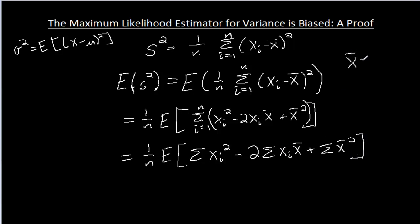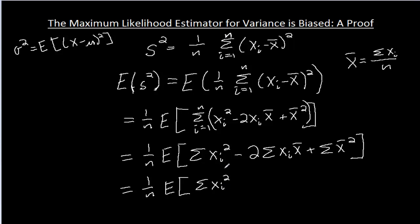Now remember that x̄ is the sum of the xᵢ's divided by n. So I have 1 over n times the expected value of the sum of the xᵢ squareds, and then minus 2 — now the sum of xᵢ's is x̄ times n — so I have x̄ times n times x̄. Plus: x̄ squared does not change when i changes; it's the average of all those x's. So when I add up n of these, I'm just multiplying n by x̄ squared, giving n times x̄ squared.